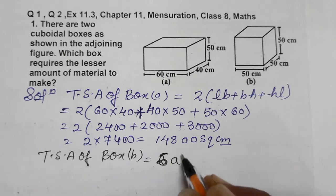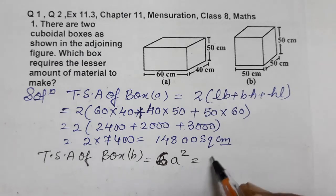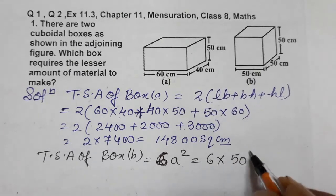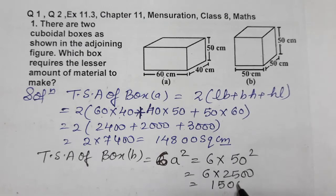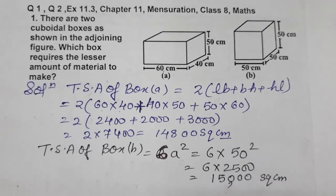6A squared because all surfaces are equal. So 6 into A squared, where the side A is 50. So 50 squared: 50×50 is 2500. Now multiply 25×6, which is 150, and add two zeros, giving us 15,000 square centimeters.